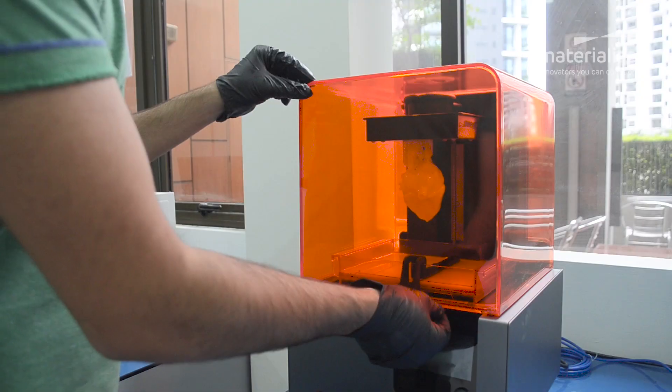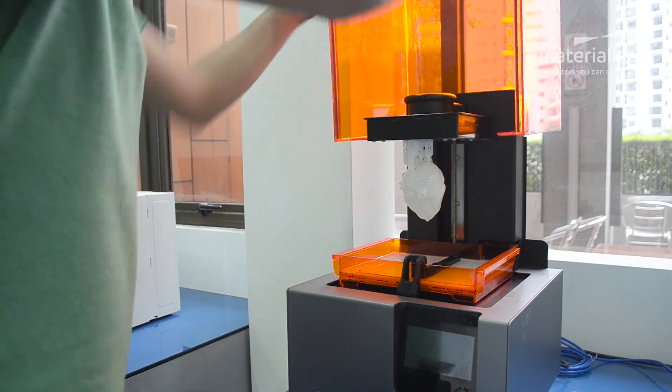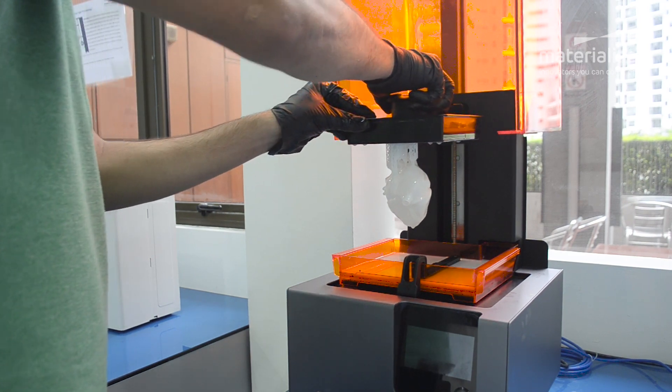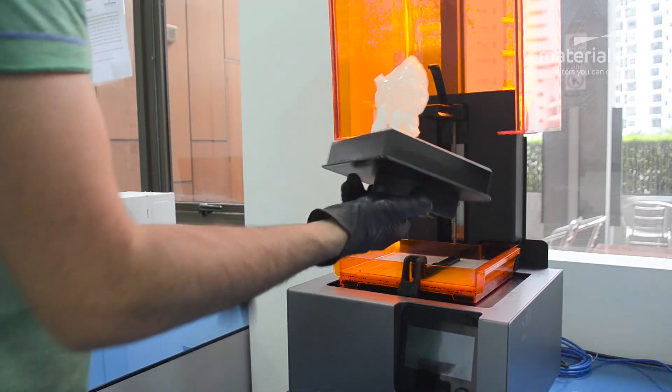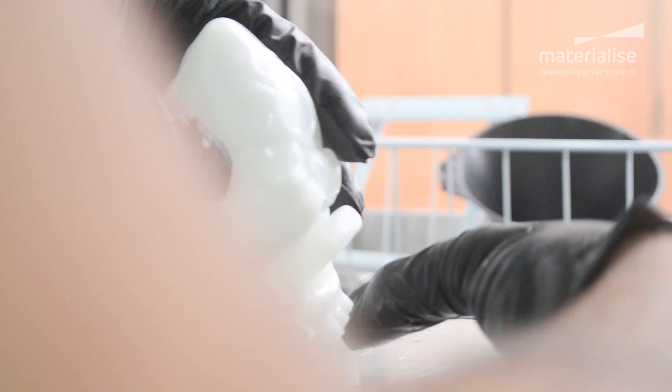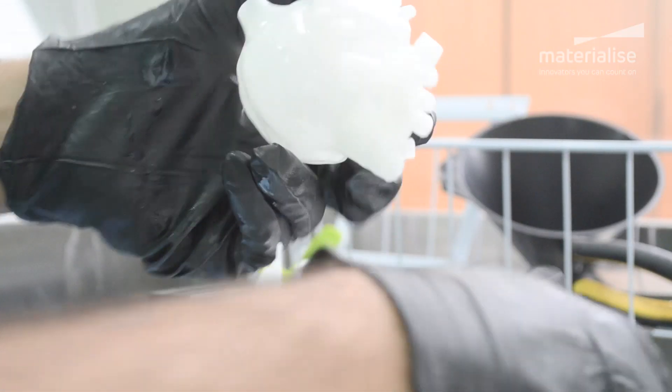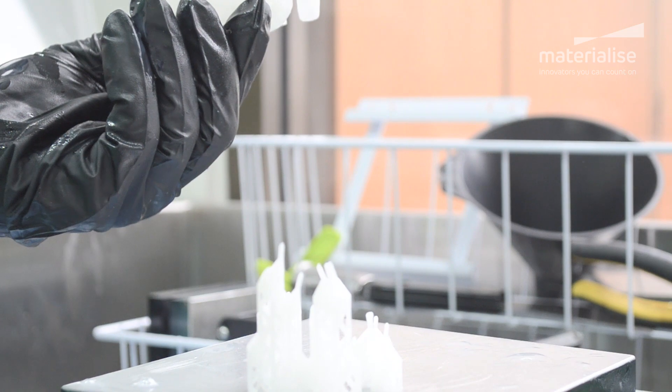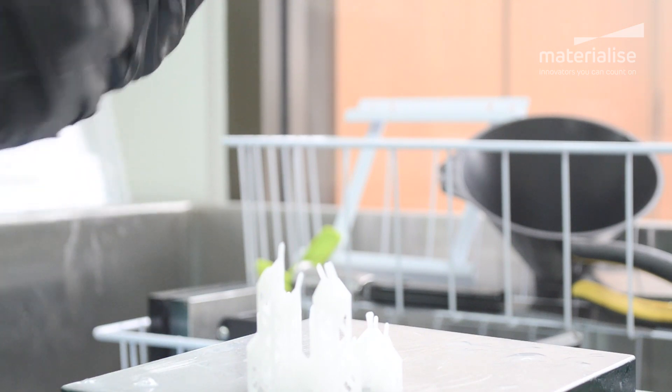In our experience, the most challenging part of printing with a DLP system is generating the right support structures for your part. Due to the high suction forces, support structures generated for DLP have to be stronger and denser compared to those of conventional machines.